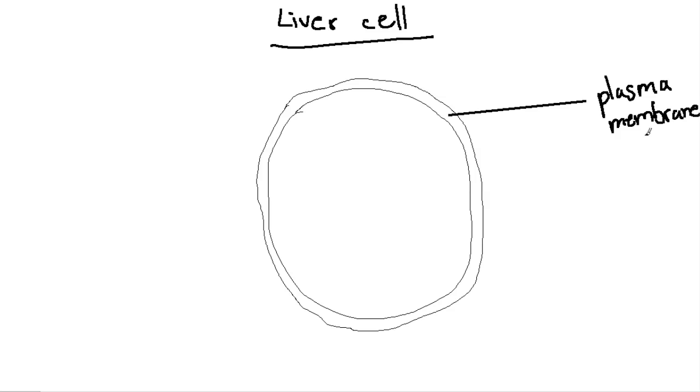And our plasma membrane really controls what comes in and goes out of the cell, because it's semipermeable. So it controls what can enter the cell and what exits the cell.